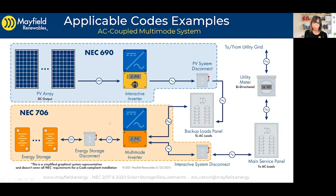Then we have our circuit sizing. We have different circuits here — we have input circuits. If we have a battery bank that is separate from our multimode inverter, we have to size those circuits between the battery bank and the disconnect, and between the energy storage disconnect and the multimode inverter. We have to make sure we're using the appropriate current on the input side of the inverter. And on the output side, we have a rated output that we'll use to size these AC circuits.